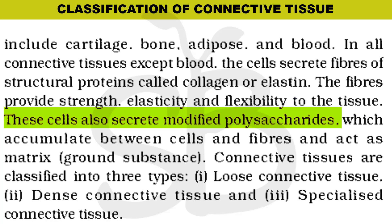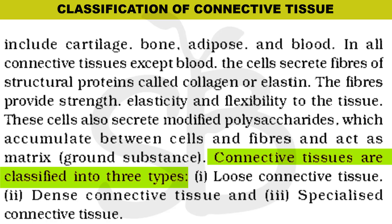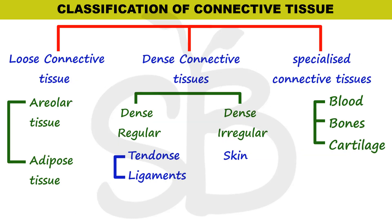Connective tissues also contain polysaccharides, which are carbohydrates, accumulated in different cells. These are part of the matrix, also called ground substance. The classification of connective tissues includes three types: loose connective tissue, dense connective tissue, and specialized connective tissue.